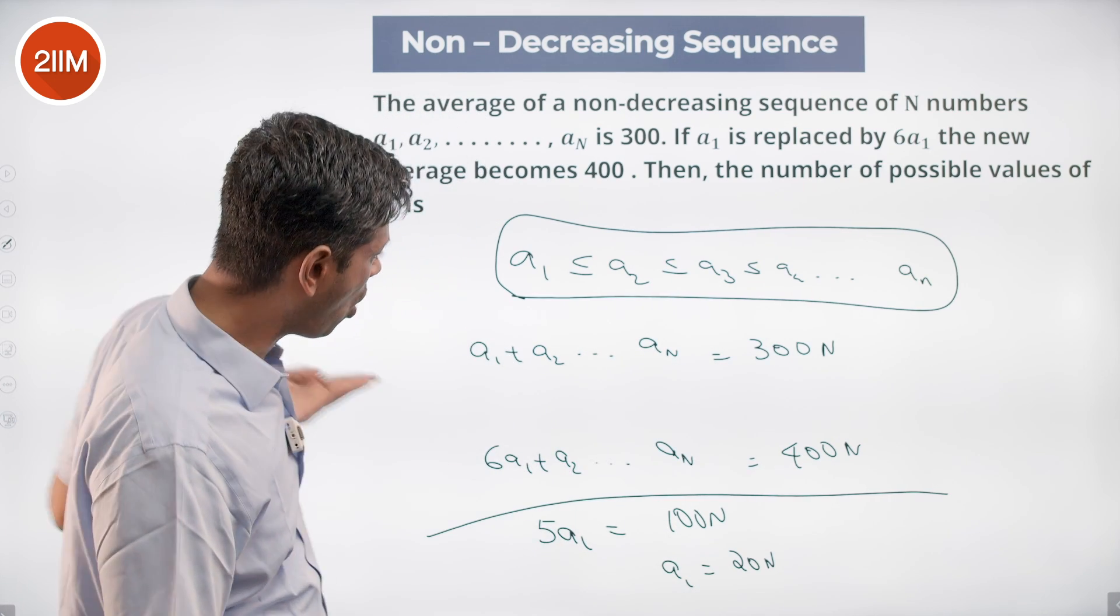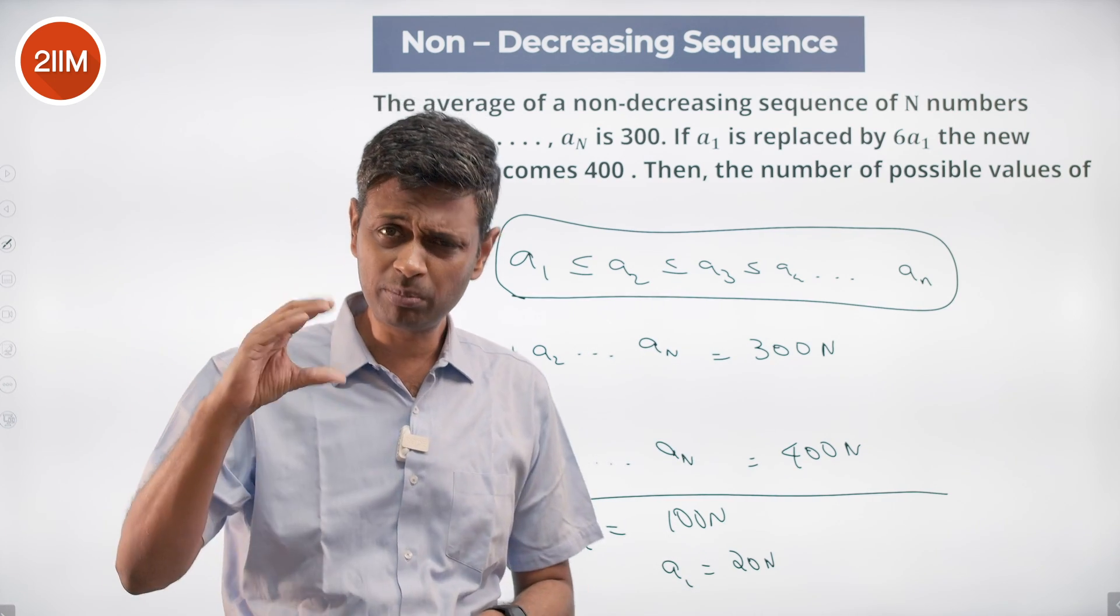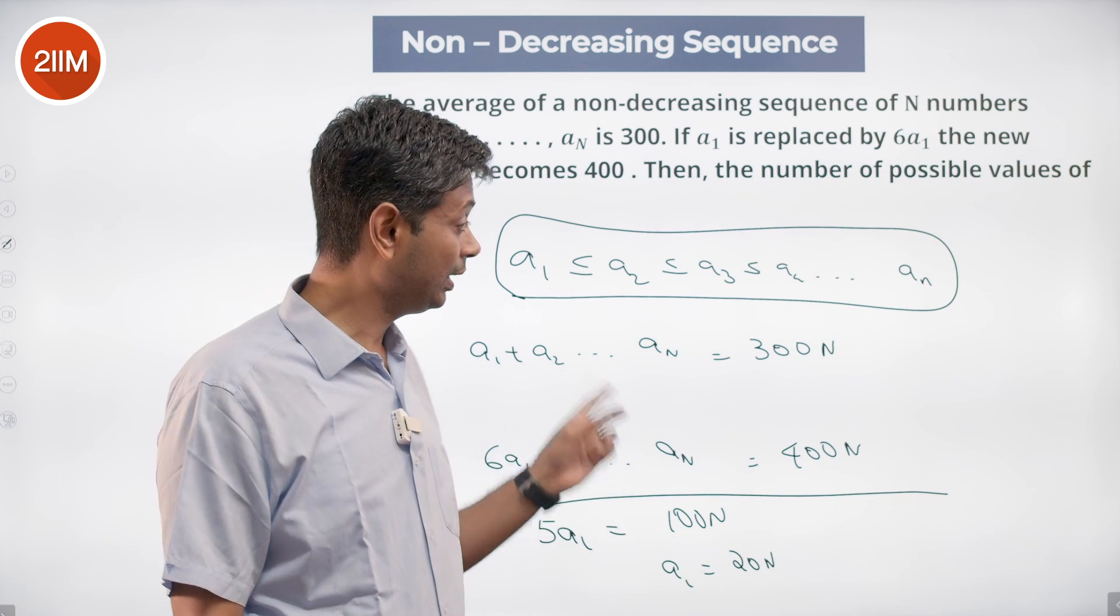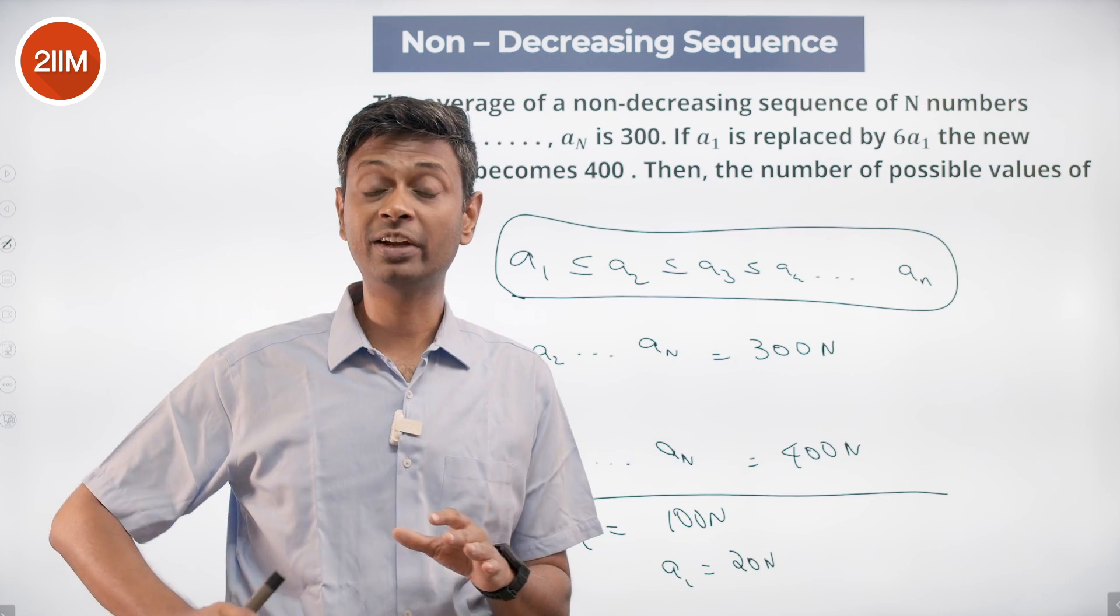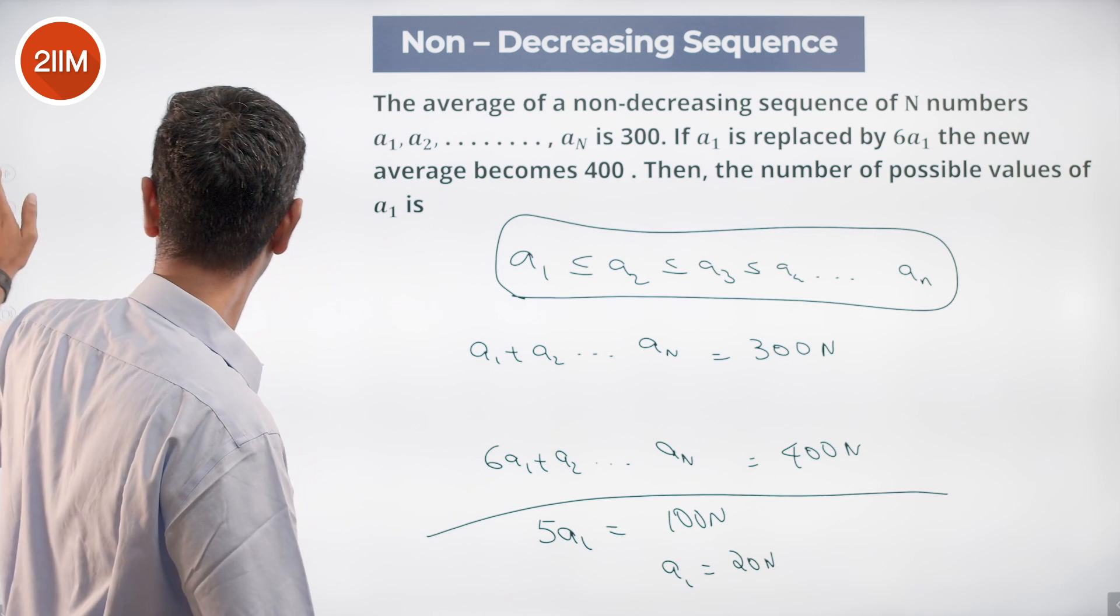You put all of them 20, the minimum possible scenario, in that situation adding up to 300. Let us find what value N can take.